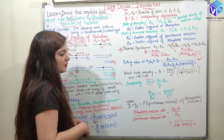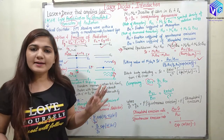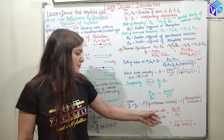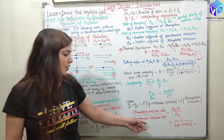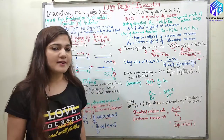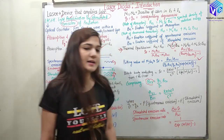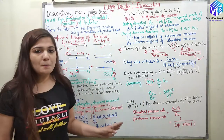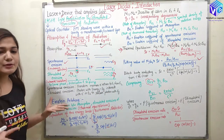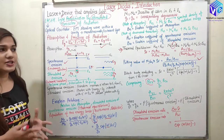When G1 equals G2, the probability of spontaneous emission is directly equal to the probability of stimulated emission. The ratio of stimulated emission rate to spontaneous emission rate equals B21/A21 * ρF, which relates to 1/(exp(HF/KT) − 1). I hope you understood how we can relate spontaneous emission, stimulated emission, and absorption with the help of Einstein's relation.